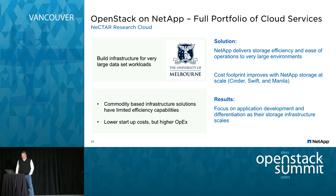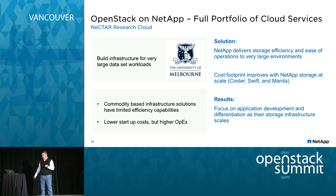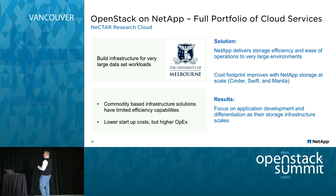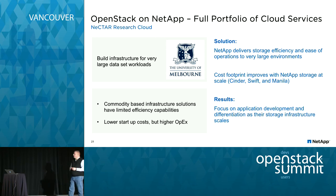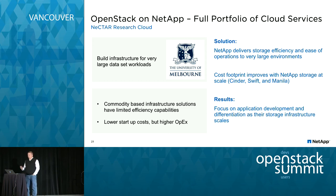The University of Melbourne's Nectar Research Cloud is making use of the full set of NetApp capabilities to deliver a full portfolio of cloud services: block, object, and soon-to-be file. For their Swift on E-Series deployment, instead of deploying 3x the capacity of the objects they want to deliver, it's about 1.3x — a successful deployment since 2014. They started with block storage via Cinder, have both 7-mode and Clustered ONTAP deployed, and intend to be among the first production Manila deployments.